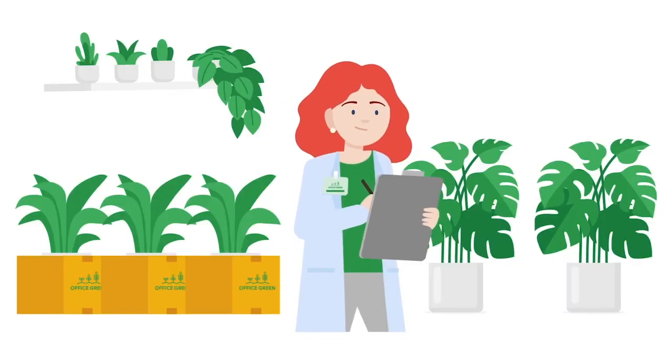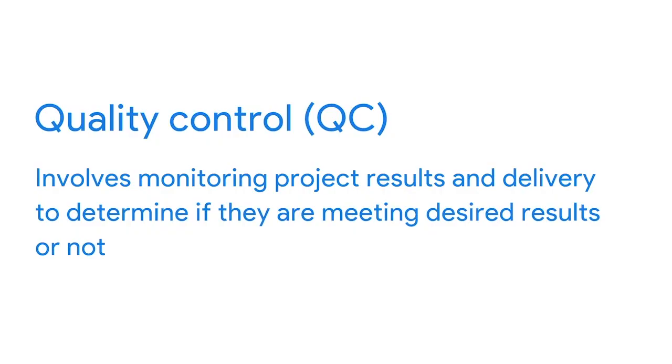The final concept of quality management is quality control, often shortened to QC. Techniques are used to ensure quality standards when a problem is identified or if the quality plan is not executed in the desired manner, and corrective actions should be taken. Quality control involves monitoring project results and delivery to determine if they're meeting desired results. If not, alternative actions should be taken. Quality control is also integral to creating a more successful landing for the next project. After the plants are placed throughout the customer's offices, quality control may look like you or a team member taking a final walkthrough, checking for broken planters or plants damaged in transit and swapping them out when necessary.